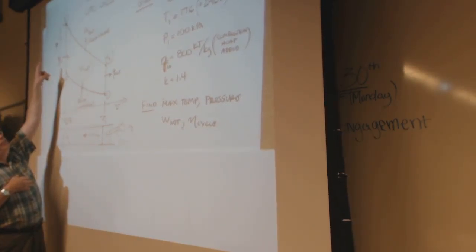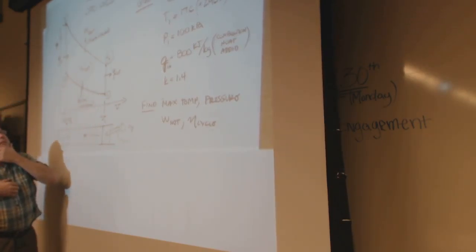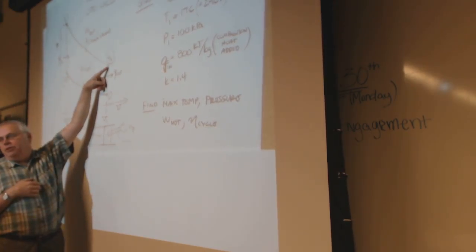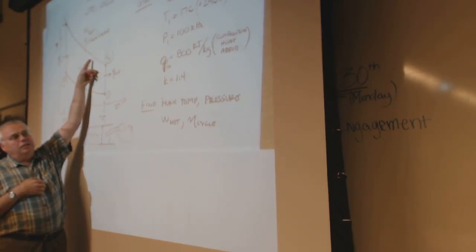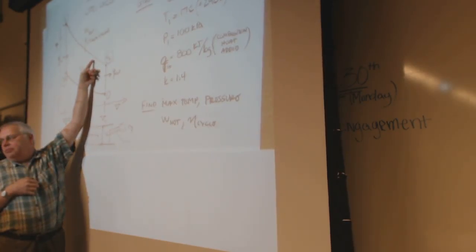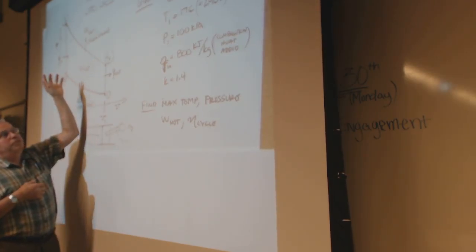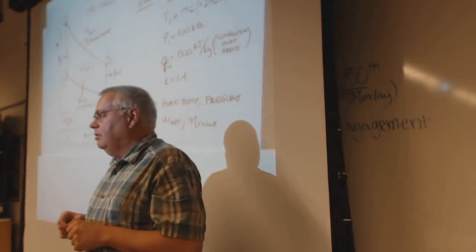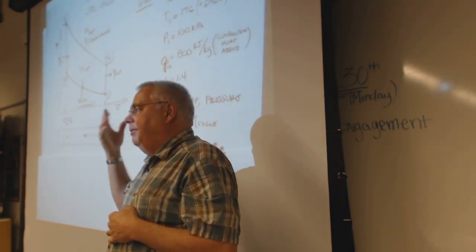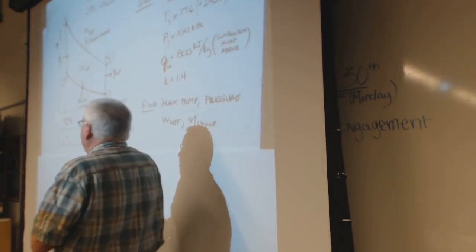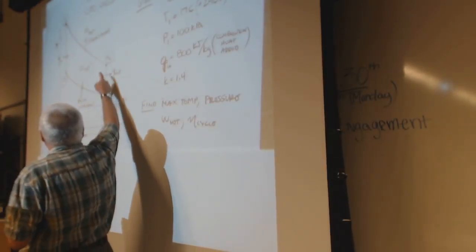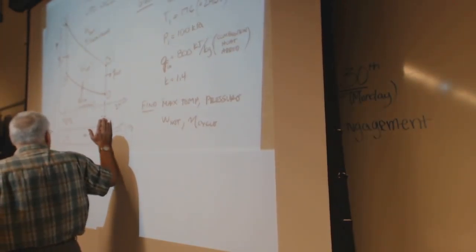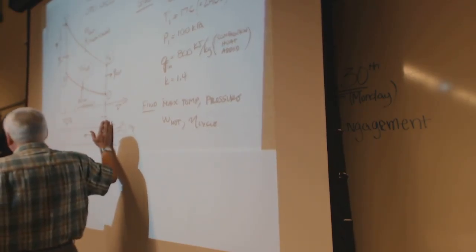Once we figure out the temperature, it then comes down with an isentropic expansion — that's the power stroke. It ends up at some temperature, which we can calculate using the isentropic relationships: the formulas with temperature, pressure, and volume with K in the exponents. Anytime you have K in the exponent, that was derived from an isentropic process. And then the cooldown comes back. The piston moves from compression to expansion, work goes in one way and comes out the other.